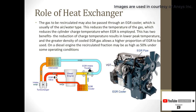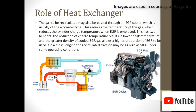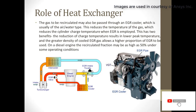Now a brief discussion on the role of the heat exchanger: the gas to be recirculated passes through the EGR cooler, which is usually an air or water type heat exchanger. This reduces the temperature of the gas, which reduces the cylinder charge temperature when EGR is employed. There are two benefits: a reduction in charge temperature results in lower peak temperature, and the greater density of cooled EGR gas allows a higher proportion of EGR to be used.